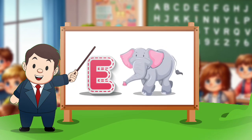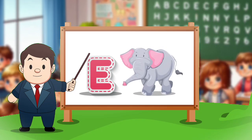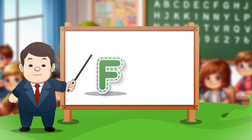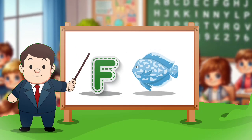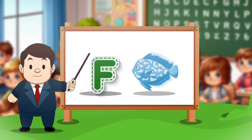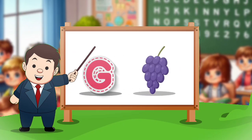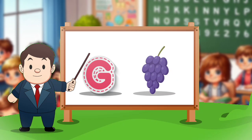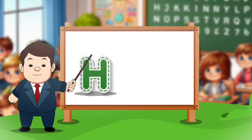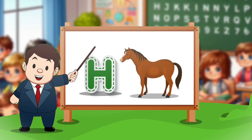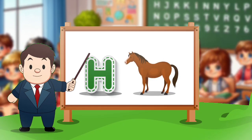E. E for elephant. F. F for face. G. G for crab. H. H for horse.